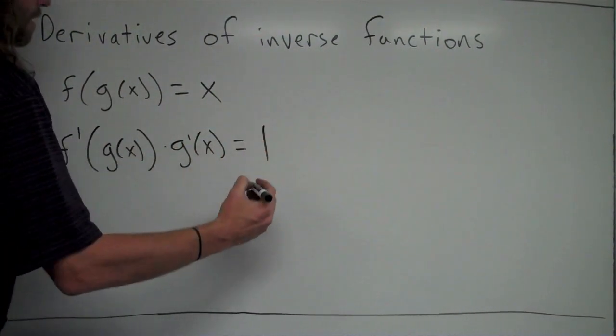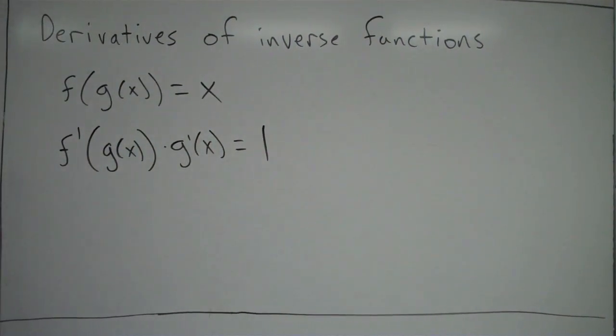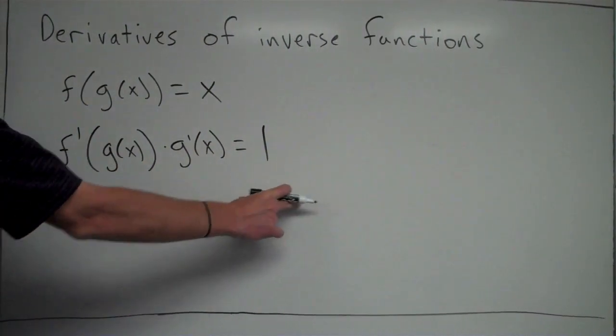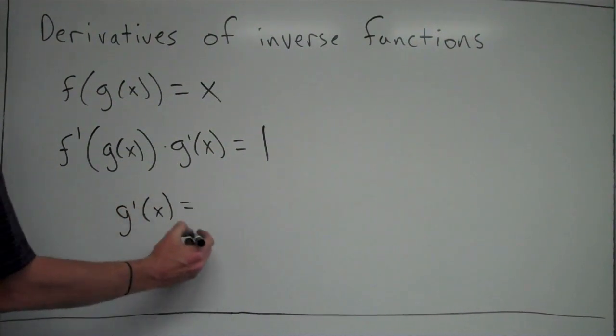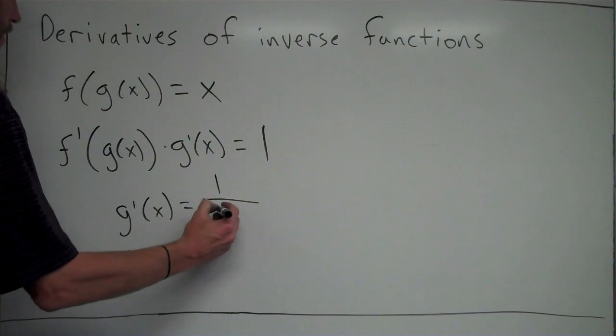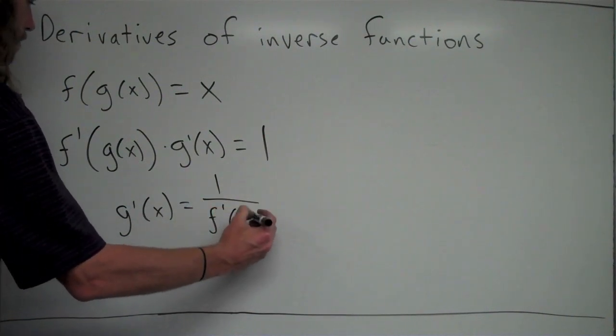On the right side, derivative of x is just 1. So my goal here is to figure out what is the derivative of g, which is g prime. Because we're calling g the inverse of f. So we want to find the derivative of the inverse of f. So I want to find g prime of x. So what I can do is just divide this over here, and I'm going to get g prime of x is equal to 1 over f prime of g of x.